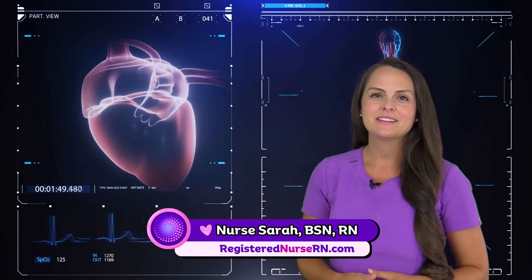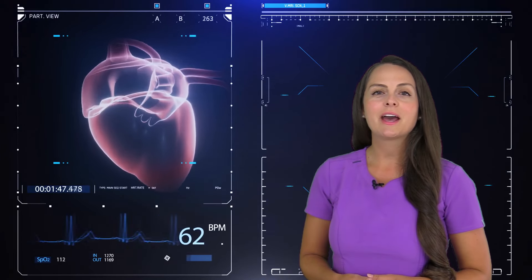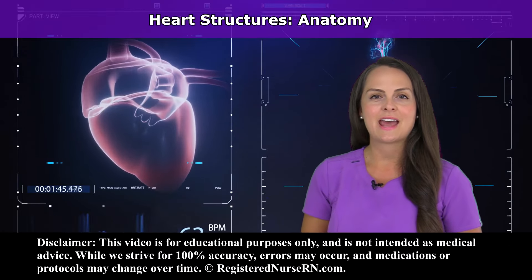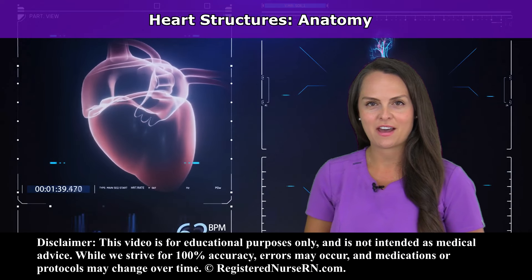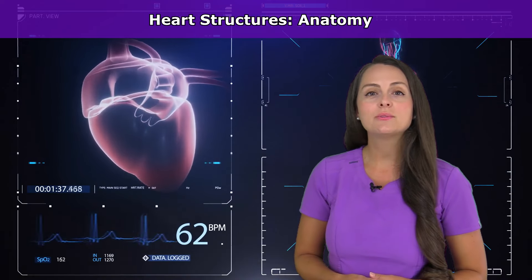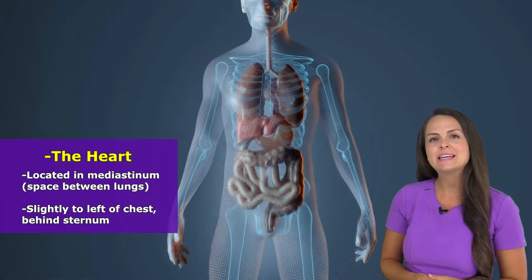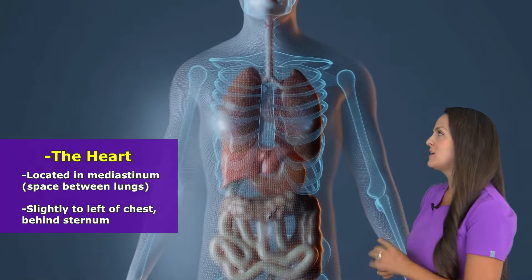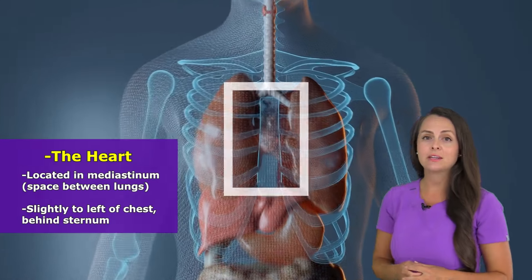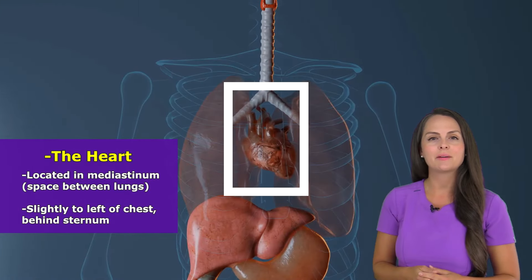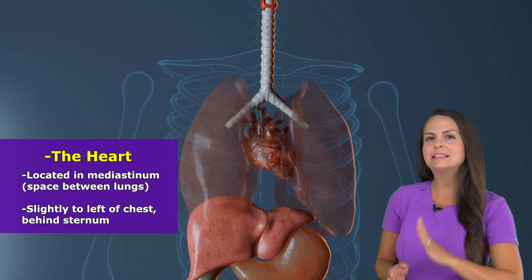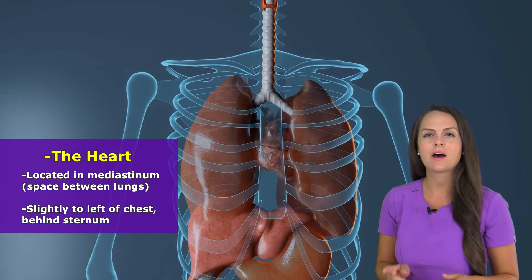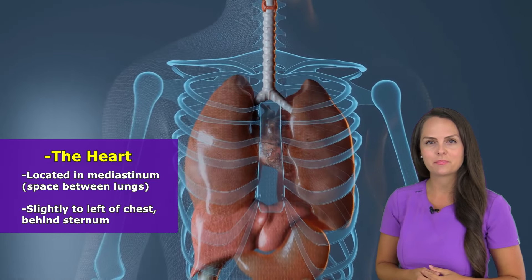Hey everyone, it's Nurse Sarah and in this video I want to be covering the heart's anatomy such as the chambers, the great vessels, and the valves. The human heart is located in the mediastinum, which is the cavity between your right and left lung, and it's positioned slightly left to the center of the chest and is behind the sternum.